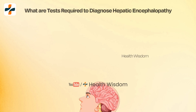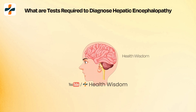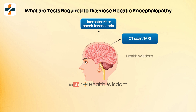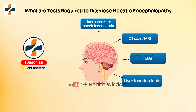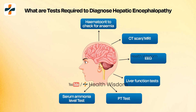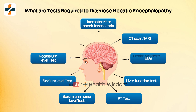Tests required to diagnose hepatic encephalopathy include: complete blood count or hematocrit to check for anemia, CT scan of the head or MRI, EEG, liver function tests, prothrombin time, serum ammonia level in the blood, sodium level, potassium level, and kidney function test.